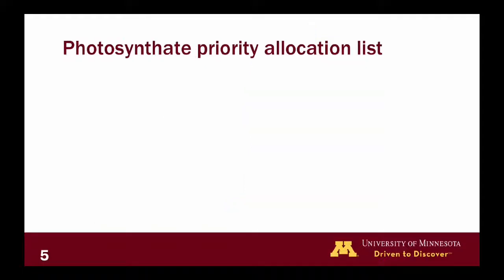Now that we've talked about growing space and why it's important, we can think about how trees use that growing space — what are they doing with those resources? I'm going to ask you to draw on an introduction biology, ecology, or silviculture course and think about how trees allocate their resources. Pause the lecture and write down the six things that trees allocate photosynthesis to.